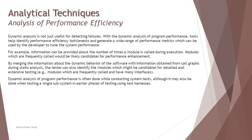The next topic in dynamic analysis is analysis of performance efficiency. Dynamic analysis is not just useful for detecting failures — performance tools help identify performance efficiency bottlenecks and generate a wide range of performance metrics that developers can use to fine-tune system performance. Performance scenarios measure parameters such as total throughput or hits per second, CPU utilization, memory utilization, and processor utilization. You may have SLAs based on these parameters, such as throughput being greater than or equal to a threshold.